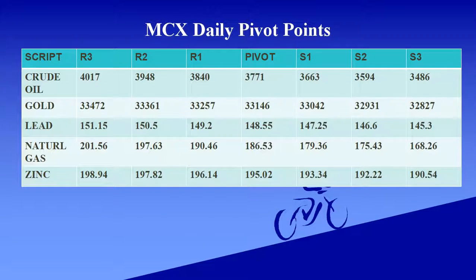Commodity MCX daily pivot points. Crude oil pivot level is 3,771. Support level ranges: 3,666 and 3,486. Resistance level ranges: 3,840 and 4,017.